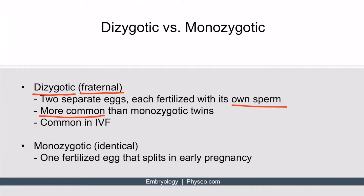Dizygotic twinning is especially prevalent when a couple goes through IVF treatments. The second type of twinning is called monozygotic, or identical twins. Monozygotic twins arise from one fertilized egg that splits early in pregnancy. We will discuss the timeline of this splitting process a little later in this video.